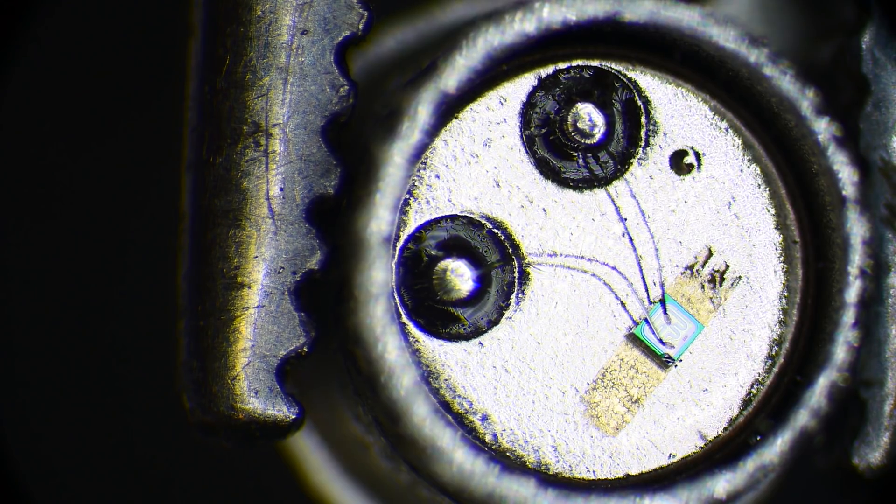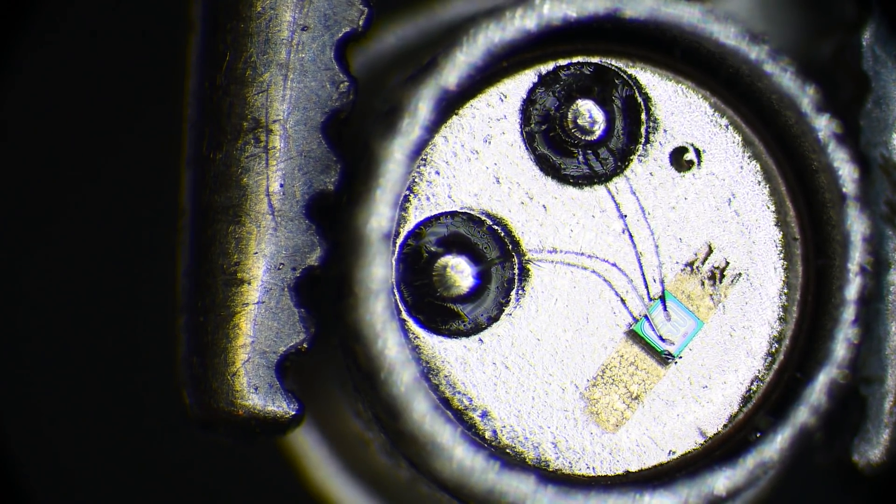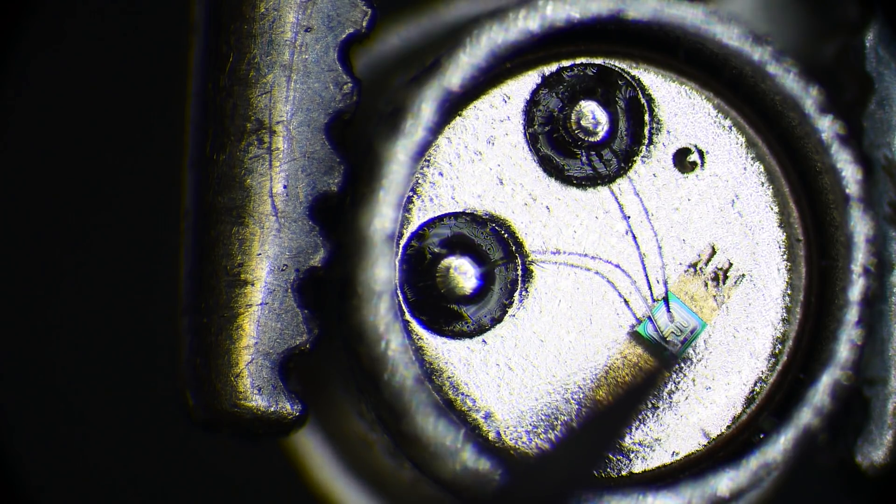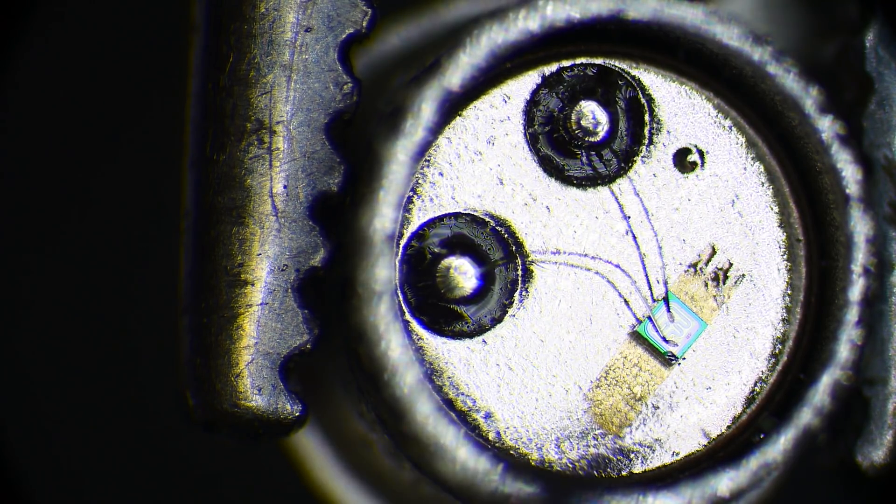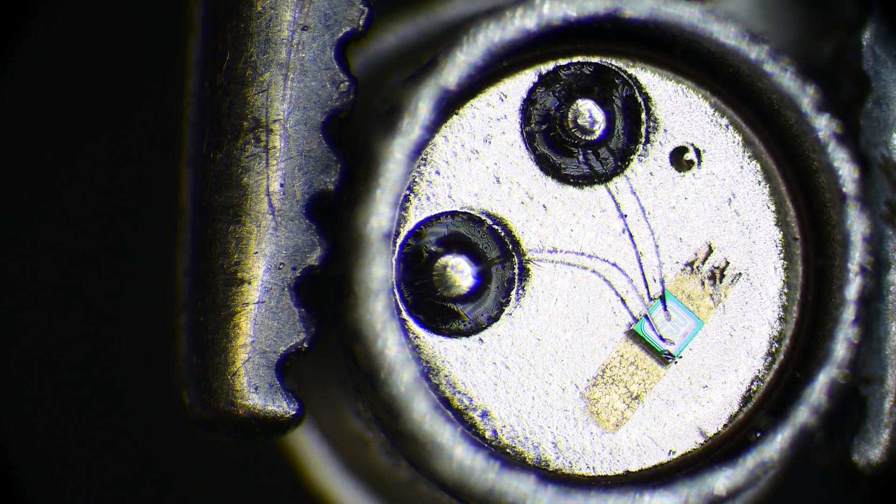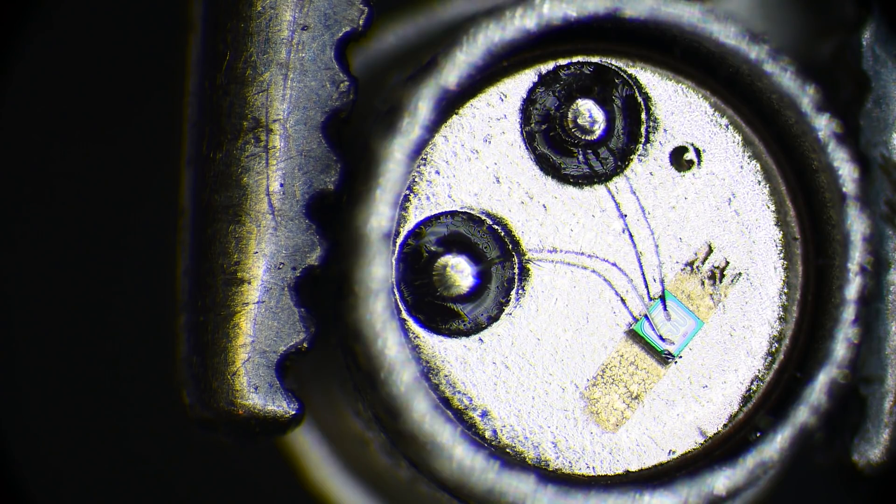And the actual transistor is that little blue, looks kind of blue here, this little blue thing down here with two bond wires on it. So these look like silver bond wires, possibly aluminum, that go off to the posts and they make contact to the transistor.